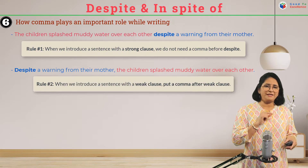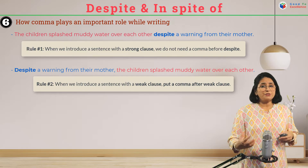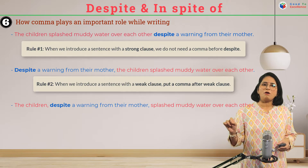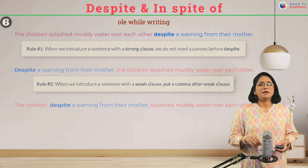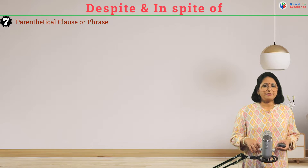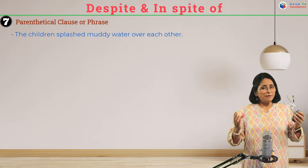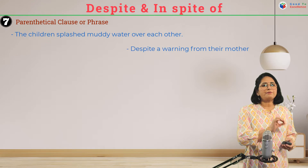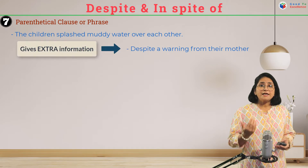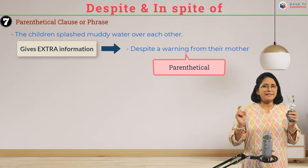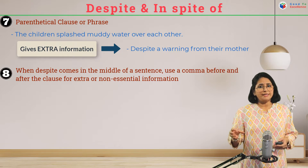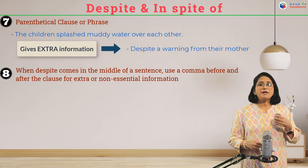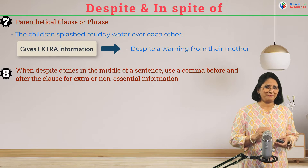There's another way to write the same sentence: 'The children, [comma] despite a warning from their mother, [comma] splashed muddy water over each other.' If we remove the 'despite' clause, the meaning does not change — it provides extra information. Such a clause is called parenthetical. When 'despite' comes in the middle of a sentence, check whether it is essential or non-essential. If it is extra or non-essential, use a comma before and after the clause.